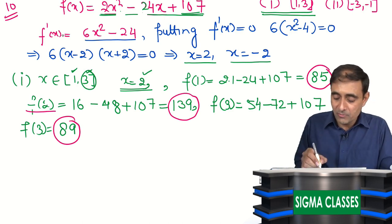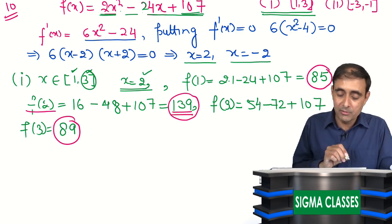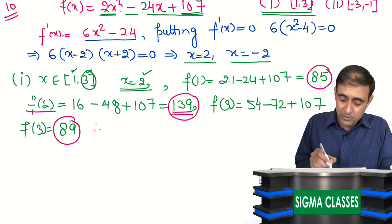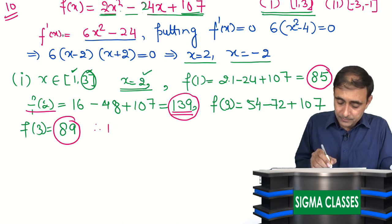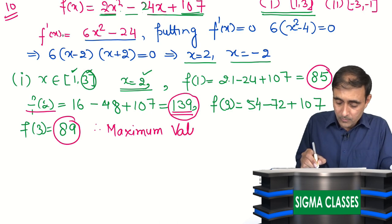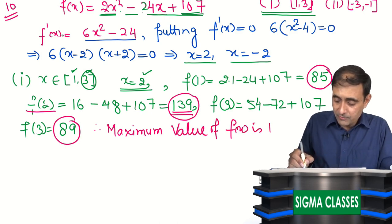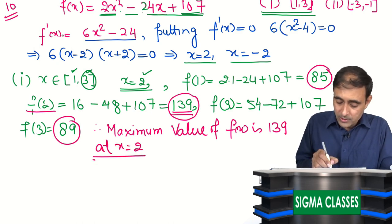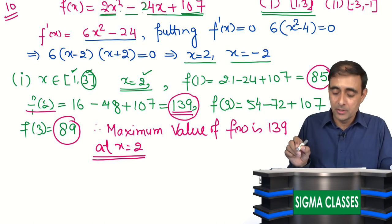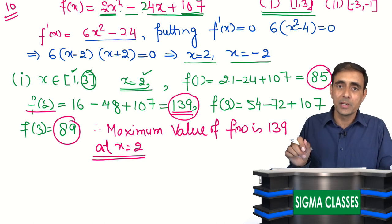We need to find the maximum value among these three. The maximum is 139. Therefore the maximum value of f(x) is 139 at x = 2. This is the maximum value of this function on the interval [1, 3]. Now let us see the second part.